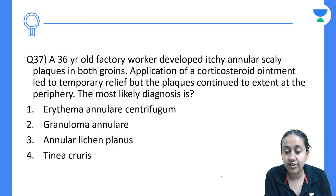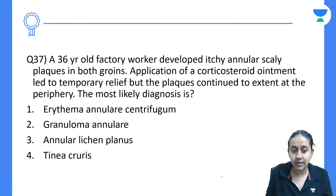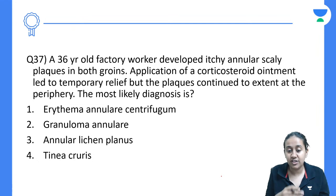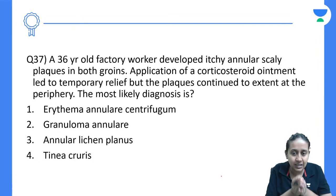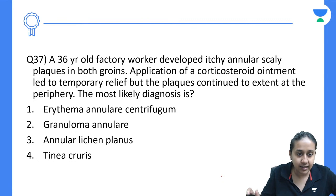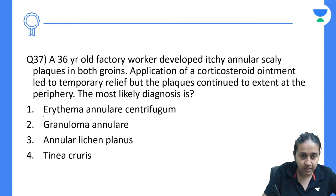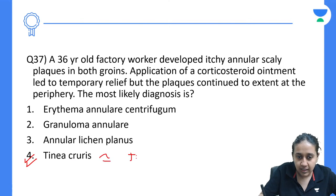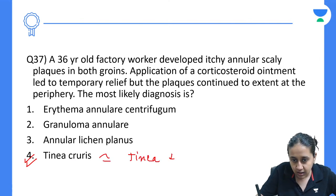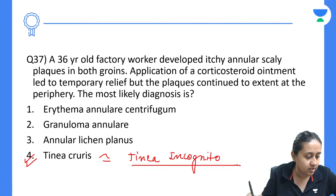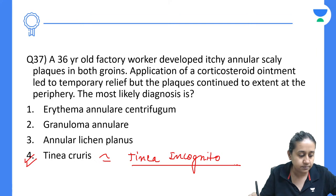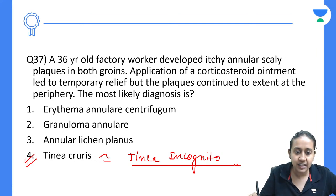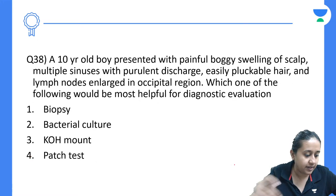The factory worker applied steroids which gave temporary relief but the lesion kept extending onto the periphery. The likely diagnosis is tinea cruris, and the better clinical term would be tinea incognito.